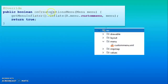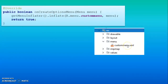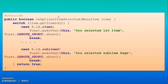You have to override the method onCreateOptionsMenu and use the statement: getMenuInflater().inflate(R.menu.custom_menu, menu). Whatever XML file you created — custom_menu.xml — this file is used for creating the menu, and that menu will be added to your main layout.